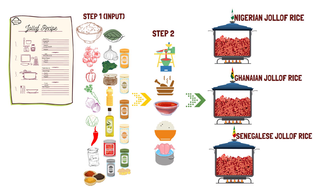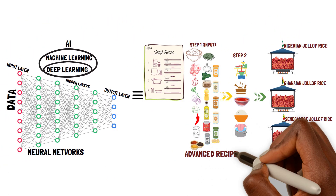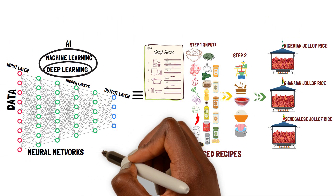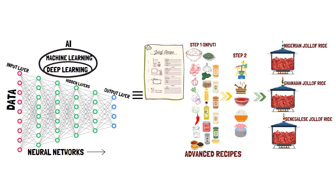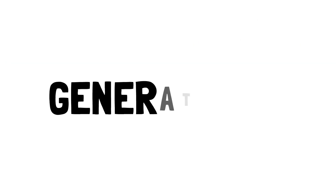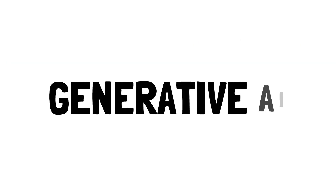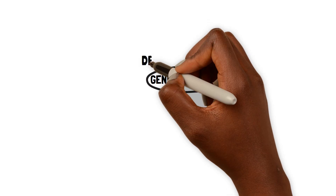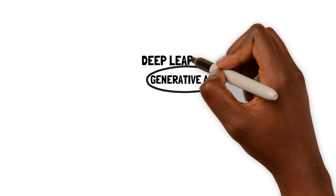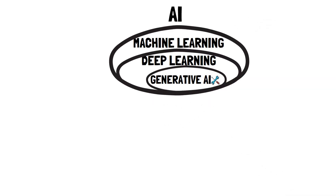This art of leveraging neural networks, our advanced recipes, to generate different types of output, our Jollof Rice dishes, based on trained data about raw rice, is called Generative AI, which is one of the most popular techniques used in deep learning.